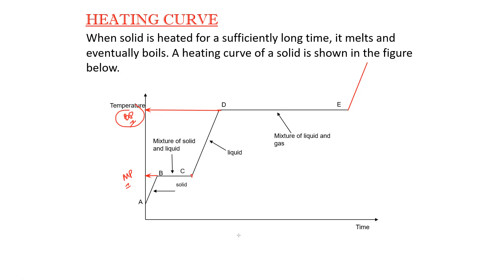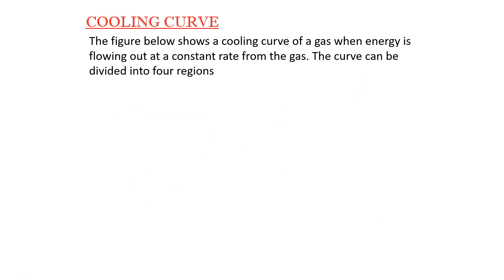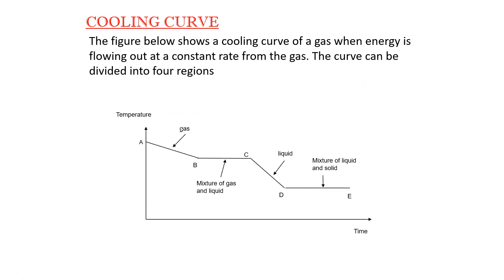The cooling curve: once gas turns into a liquid that is condensation, occurring at the boiling point. Both gas and liquid states are present during this plateau. Then the liquid starts to freeze — the temperature at which liquid turns to solid is the freezing point. Once all the liquid turns into solid, the solid temperature will further decrease. In a heating curve we supply energy; in a cooling curve we remove energy.